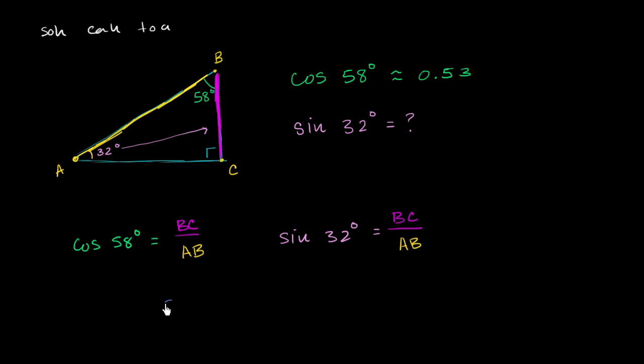So we could literally write the sine of 32 degrees is equal to the cosine of 58 degrees, which is roughly equal to 0.53.